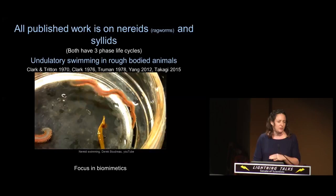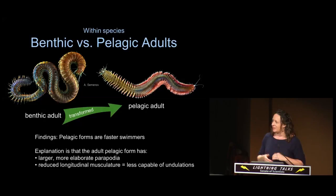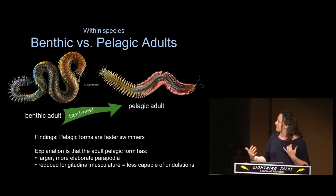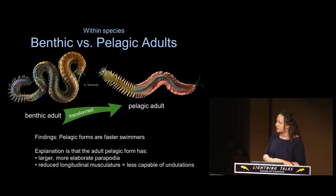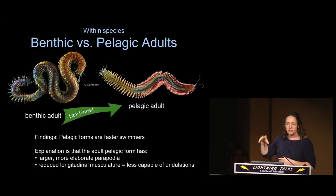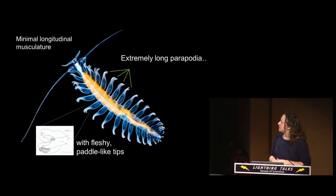It's described as undulatory swimming in rough-bodied animals — they kind of ignore the peripodia that are there because it's difficult to include them in the models. Most of this work has been focused on biomimetics, because bioengineers really want to build robots that can move like these guys — on substrate, in the water, all different kinds of things. The benthic forms have fewer peripodia and they're much shorter. In the pelagic ones they have a whole bunch more peripodia, they're much closer together and bigger. The pelagic forms are faster swimmers, hypothetically due to their longer, more elaborate peripodia and to reduced longitudinal musculature along the body — the muscles that run the length of the body and make the undulation possible.